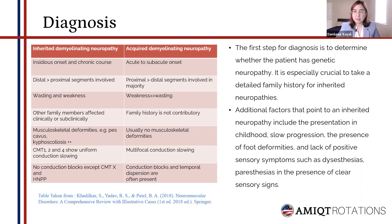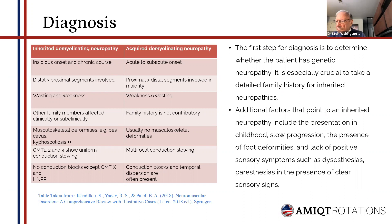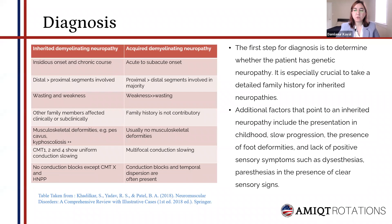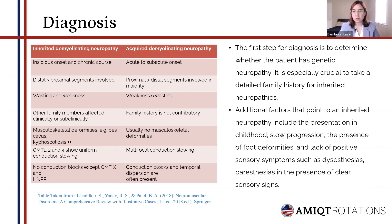The first step for diagnosis is to determine whether the patient has a genetic or acquired neuropathy. It is especially crucial to take a detailed family history for inherited neuropathies. Clinical clues for inherited neuropathies include insidious onset with a more chronic course, distal segments more affected than proximal segments — in contrast to acquired neuropathies. There is generally a family history, but there are also sporadic cases like our case. Musculoskeletal deformities such as pescavus or kyphoscoliosis are usually present, whereas acquired demyelinating neuropathies usually do not have musculoskeletal deformities.